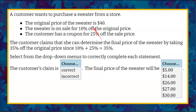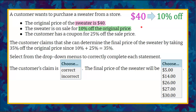Welcome back. We're going to begin with our sweater that is $40, then take 10% off that original price. So we want to find 10% of 40 and subtract it. We have 40 minus 10%, or one-tenth of 40, which is 4. So our 10% discount is $4. We subtract that, giving us $36 as our price with 10% off the original.